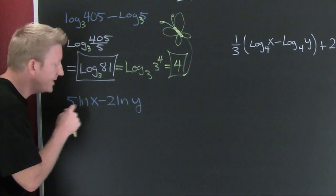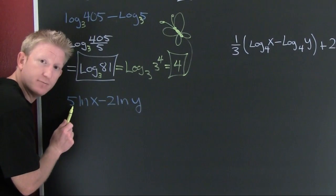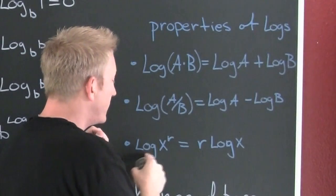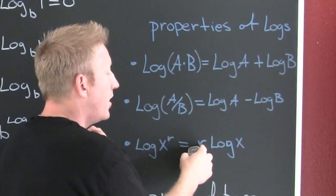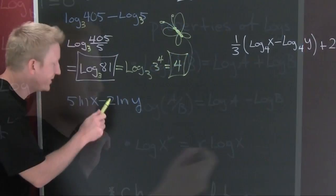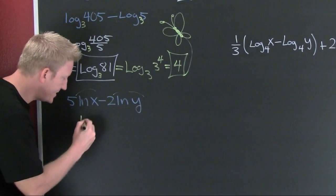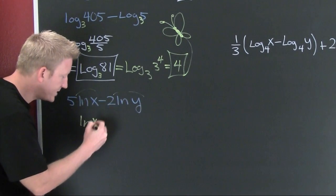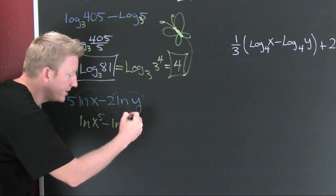We see that we cannot have any numbers in front. That's all right. We can use another special logarithm property. And log of the argument to the r power is r times the log of the argument. To bring those up. I'm going to bring that there. I'm going to bring that there. So then this is the natural log of x to the fifth minus the natural log of y squared.